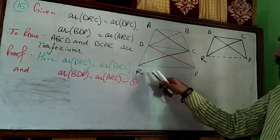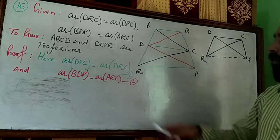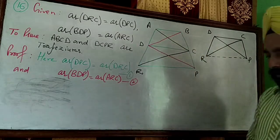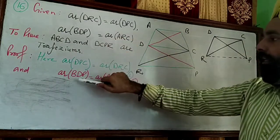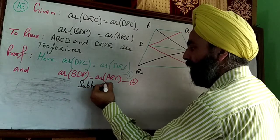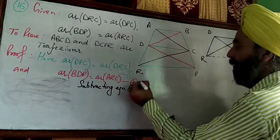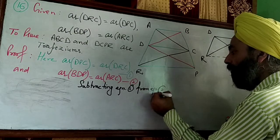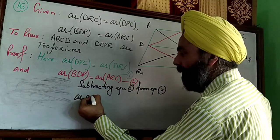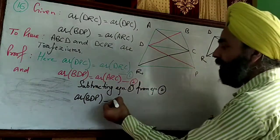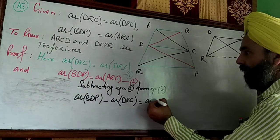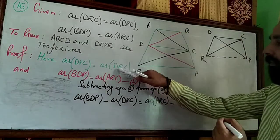Now we will subtract equation one from equation two. Subtracting equation one from equation two: left hand side is area BDP minus area DPC, and right hand side is area ARC minus area DRC.